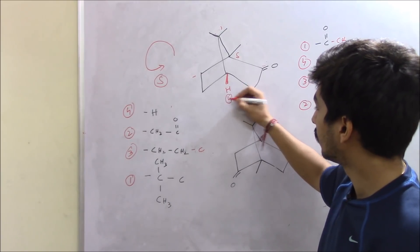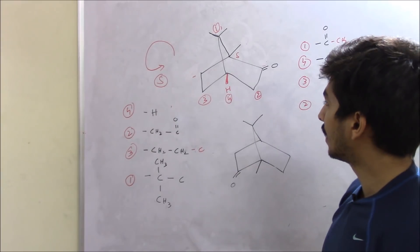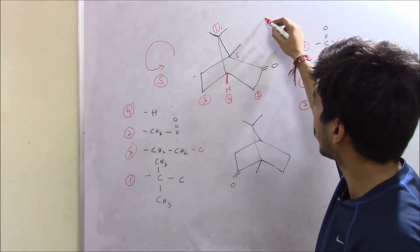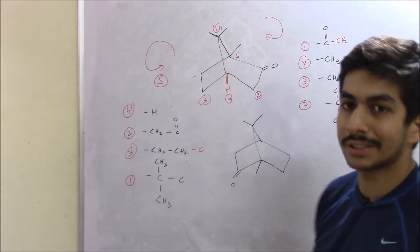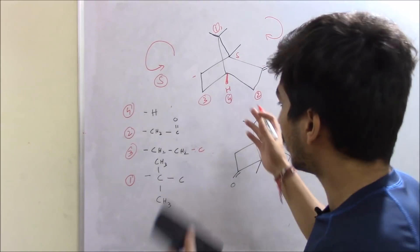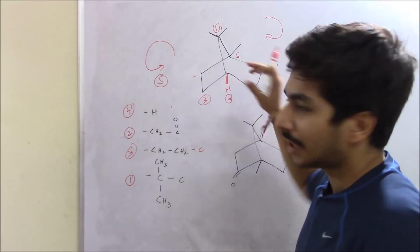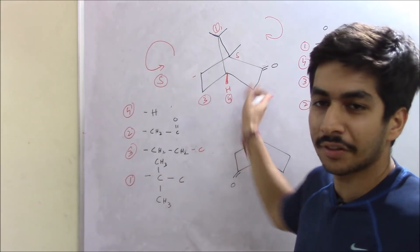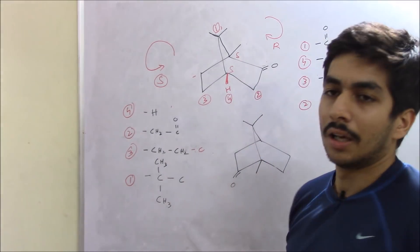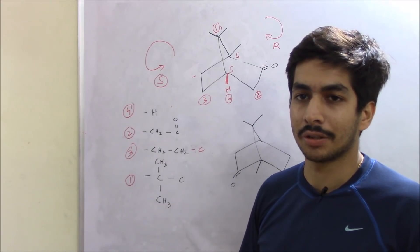Now looking at priorities one → two → three, the movement is clockwise, which would normally give R configuration. However, the lowest priority group — the hydrogen — is coming towards you instead of going away from you. Whenever the least priority group is coming towards you, simply reverse the configuration you obtained. We obtained R, so the correct configuration is S. Therefore, for camphor, both chiral centers have S configuration: 1S and 4S.